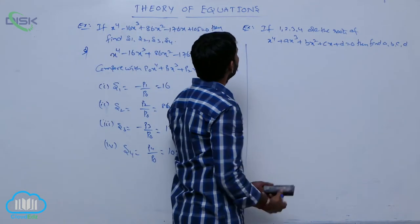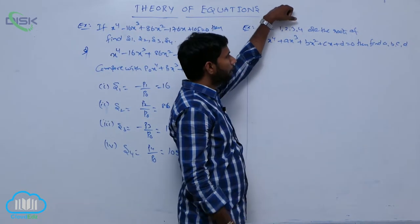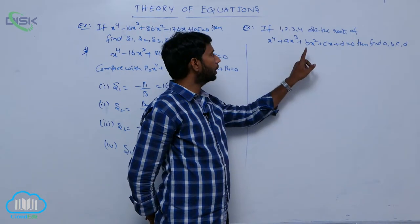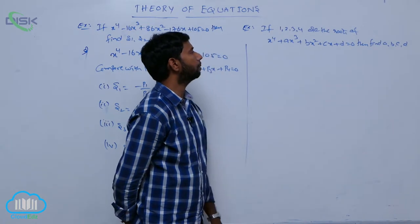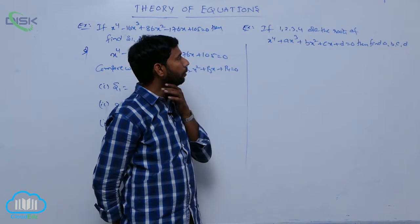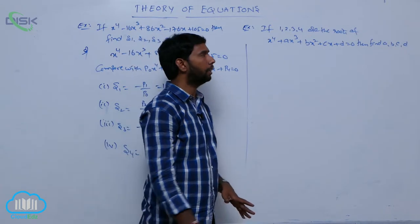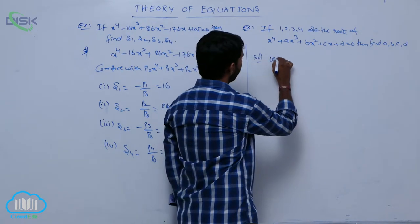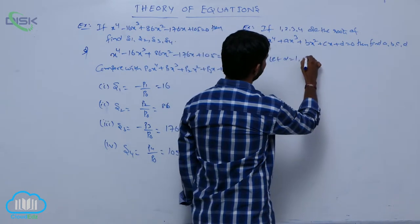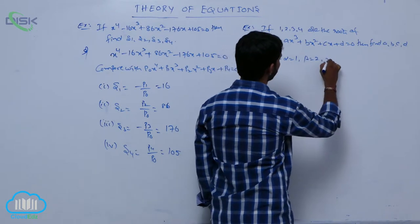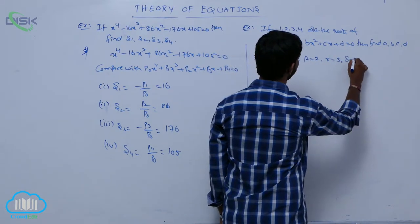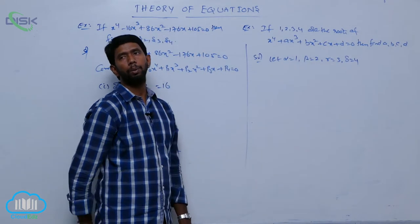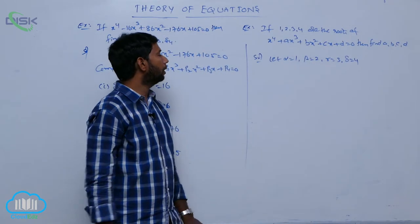Moving to another example: if 1, 2, 3, 4 are the roots of the equation x^4 plus ax^3 plus bx^2 plus cx plus d equals 0, then find the values of a, b, c, and d. Let the given roots be alpha equals 1, beta equals 2, gamma equals 3, and delta equals 4.